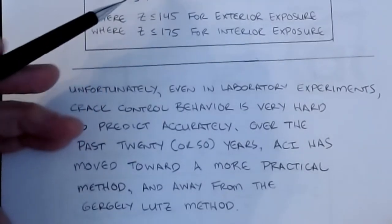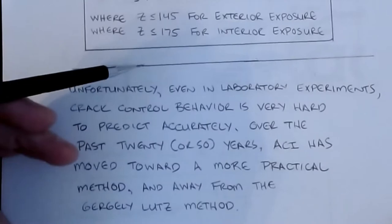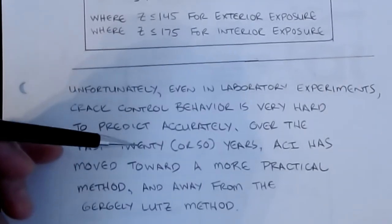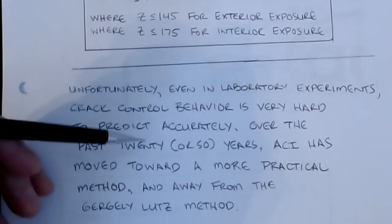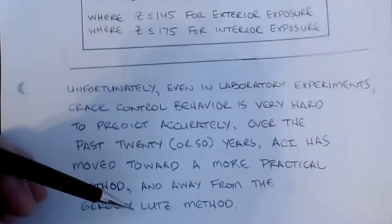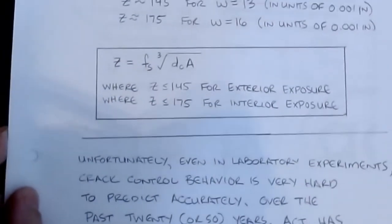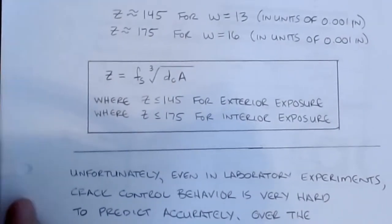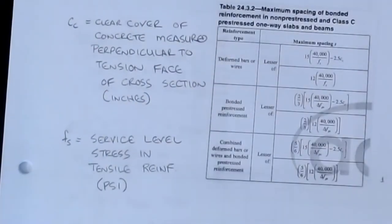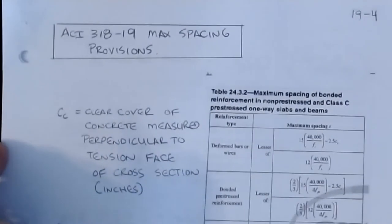Over the past quarter century, because of this, we can't go out in the field and measure Z or measure W explicitly because, even under the same loading, the same testing, our cracks will vary a significant amount. So what ACI has done over the last couple of code releases is they've moved toward a more practical method and away from the Gergely-Lutz method. But I still like the Gergely-Lutz method just because it kind of gives me a sense of better definition and better control over trying to figure out how to distribute the steel within the cross section.